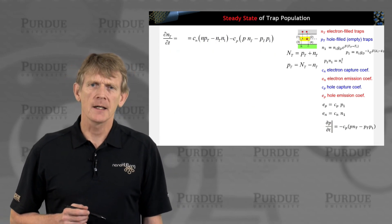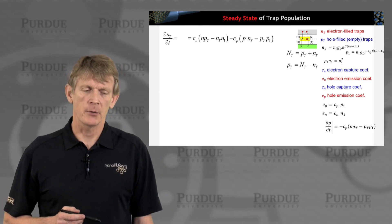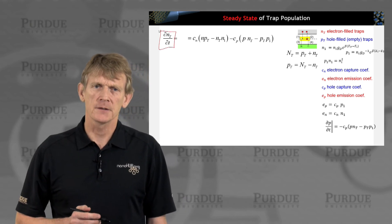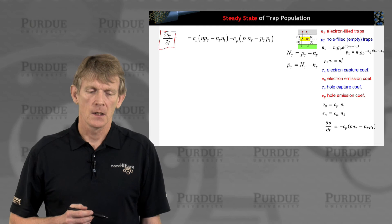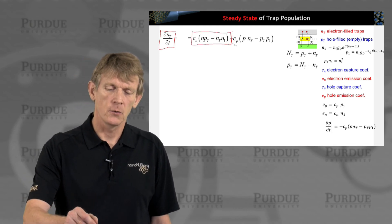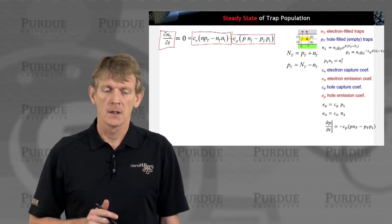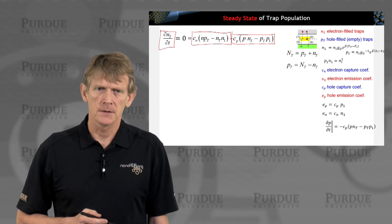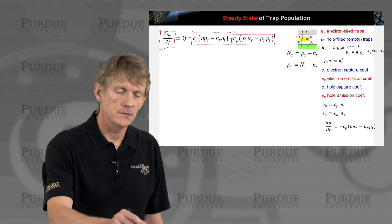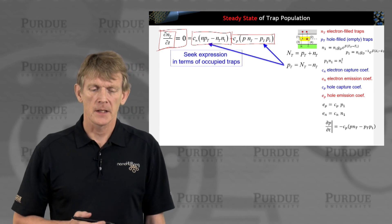Here we are. We are looking at the steady state trap population. Here is the number of electrons in the trap related again to electron processes and hole processes. In steady state, the sum of these processes, we are just setting this to zero.